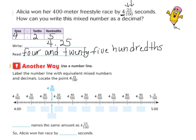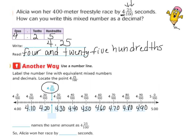Another way you could do this is with the number line. We're going to go ahead and label the number line with equivalent mixed numbers and decimals, and then locate the point four and twenty-five hundredths. I've gone ahead and filled in the missing numbers on my number line for the decimal part. I'm looking for four and twenty-five hundredths, and I know that that is halfway between 4.20 and 4.30. So we write that as 4.25 — four and twenty-five hundredths — and this names the same amount as the fraction.